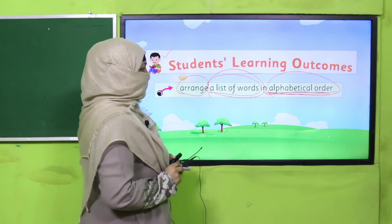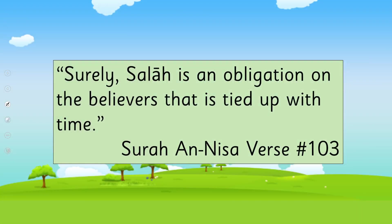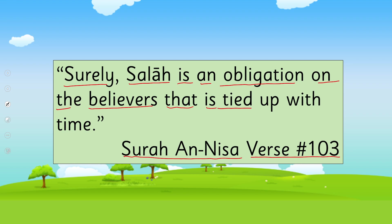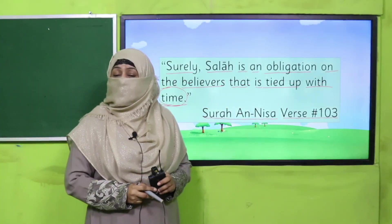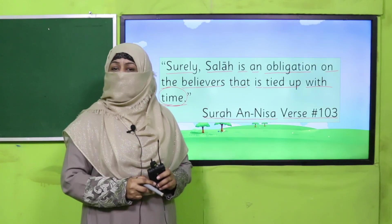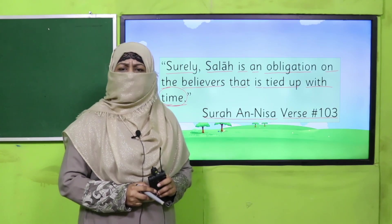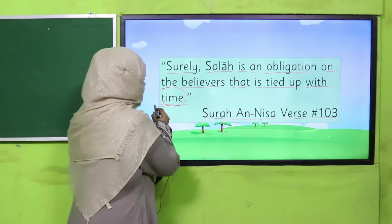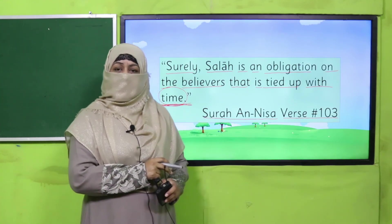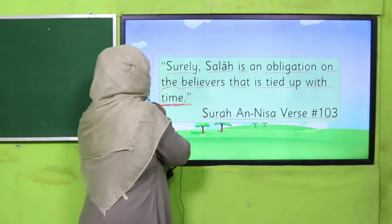Let's start with the name of Allah Subhanahu wa ta'ala. Allah mentions in the Quran, Surah An-Nisa, verse 103: 'Surely Salah is an obligation on the believers that is tied up with time.' My dear children, what is this beautiful verse telling us? It is telling us how many Salahs we offer in a day — five: Fajr, Zuhr, Asr, Maghrib, Isha. So is it possible that we offer our Fajr at the time of Asr? No, because Allah is saying we offer Salah on time.